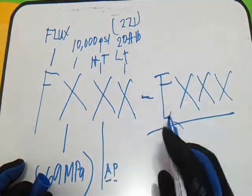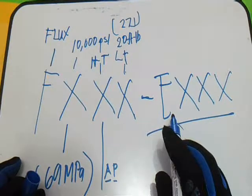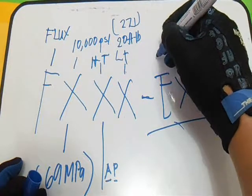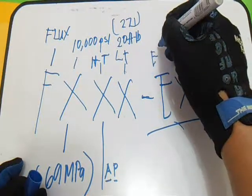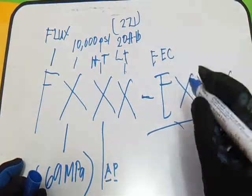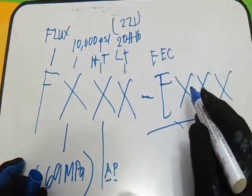We have E and EC. The meaning of E is solid electrode, and EC is composite electrode.